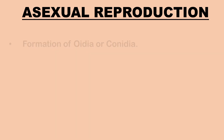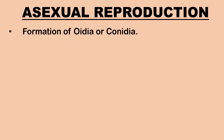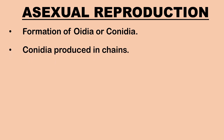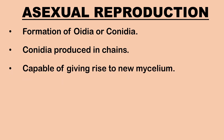Let us learn about asexual reproduction in genus Pyronema. Though rare, asexual reproduction may sometimes occur by the formation of oidia or conidia. These asexual spores are produced in chains on certain erect hyphae of the mycelium called conidiophores. On germination, each conidium is capable of giving rise to a new mycelium.